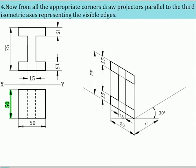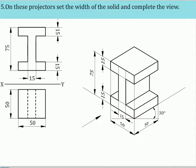From all the appropriate corners, draw projectors parallel to the third isometric axis representing the visible edges. On these projectors, set the width of the solid and complete the view.